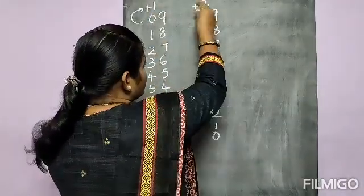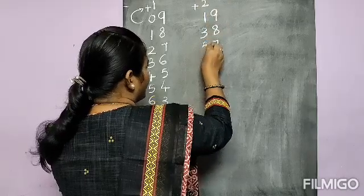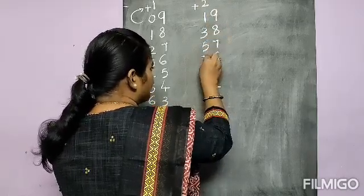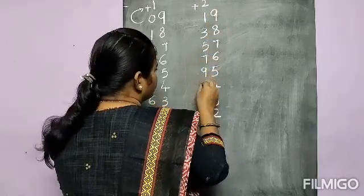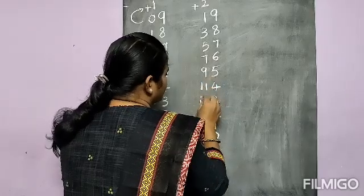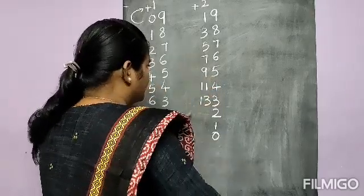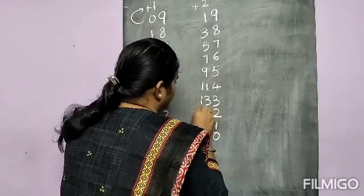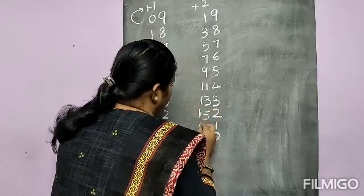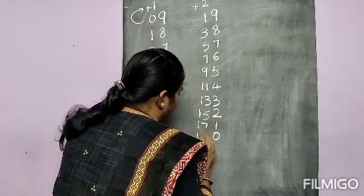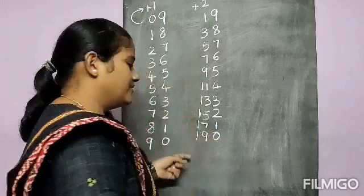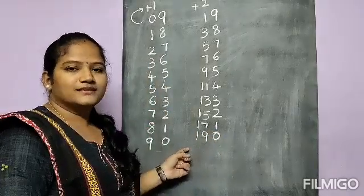So 1 plus 2 is 3, 3 plus 2 is 5, 5 plus 2 is 7, then 9, 11, 13, 15, 17, 19. This is the 19 table.